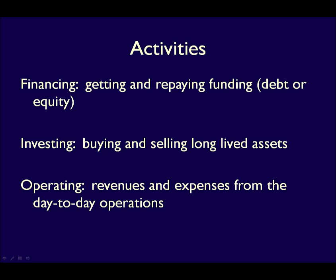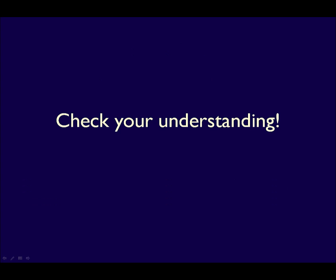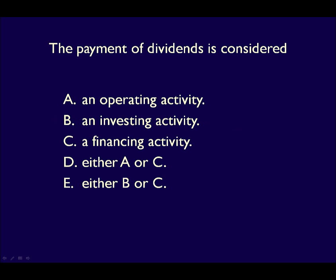When you look at the statement of cash flows, you are looking at something similar to a bank account, which shows only when cash flows in and when it flows out. To help provide information about what causes the inflow or outflow, the statement is divided into activities: financing, investing, and operating. The payment of dividends is considered a financing activity. It is not part of the day-to-day activities of a business, so it does not belong in operating activities. Investing activities are about buying and selling long-lived assets, both tangible and intangible — dividends are not a long-lived asset. Financing activities include contributions by owners, and dividends are the paying out of profit to the owners, so they belong in the same category.